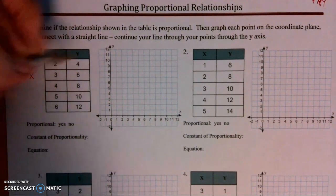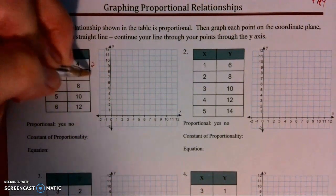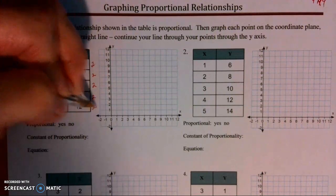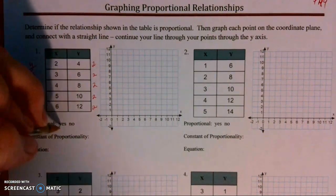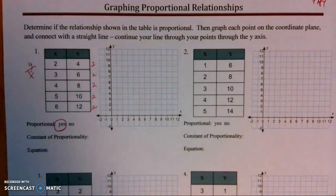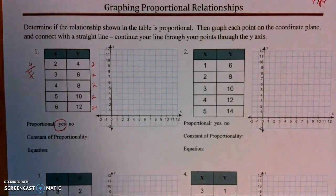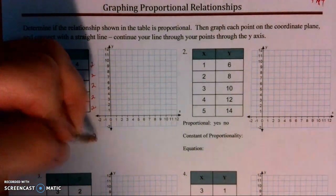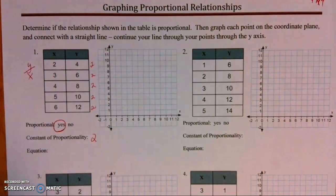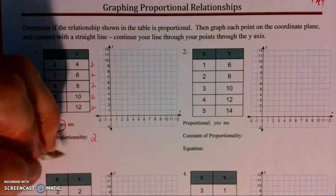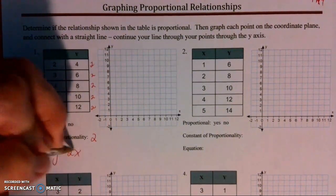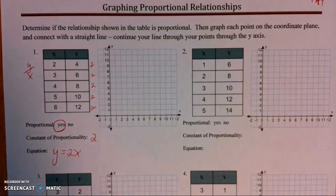Going through and dividing y by x gives us 2, 2, 2, 2, 2 — they all have that constant of proportionality. So it is proportional, my constant is 2, and my equation is y equals 2x. These are all things we have been working on.